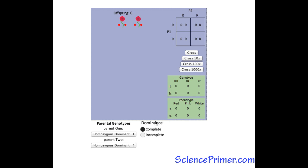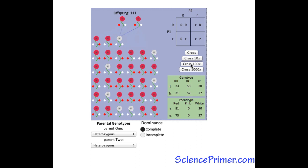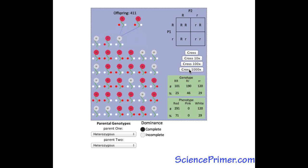Parental genotypes can be changed with the two pull-down menus at the bottom left. There is a switch to turn on and off complete dominance for the red allele. Crosses can be made one, ten, one hundred, or one thousand at a time.